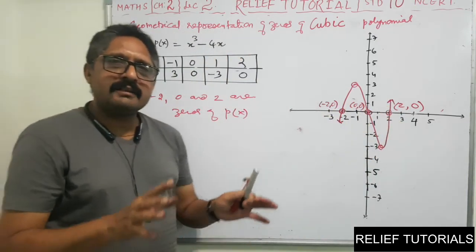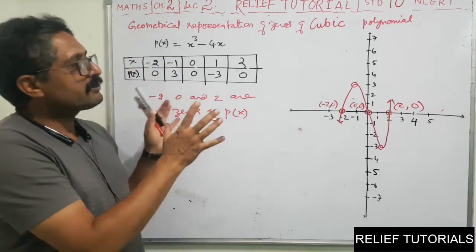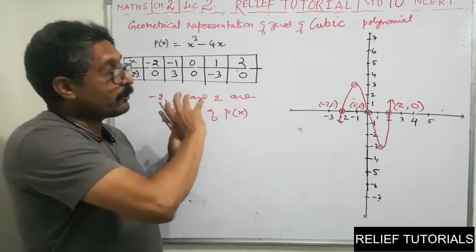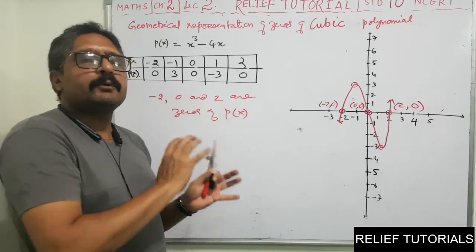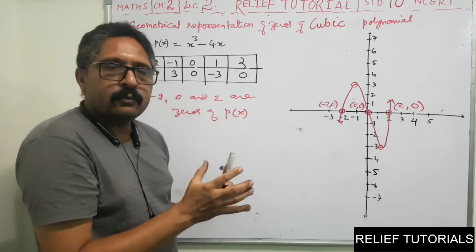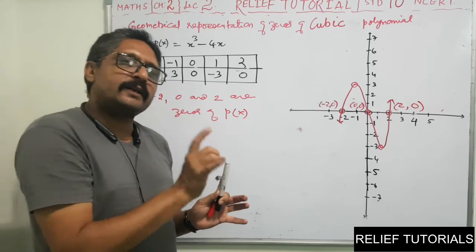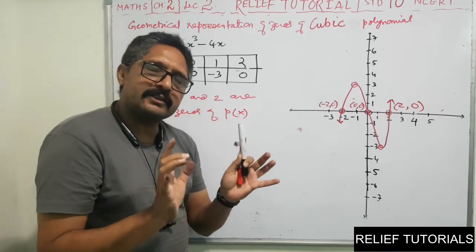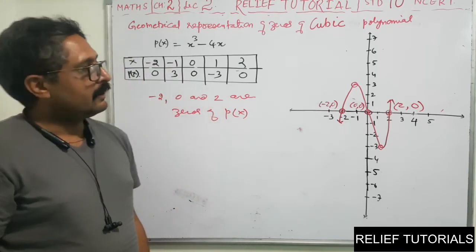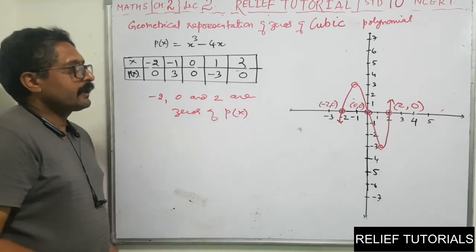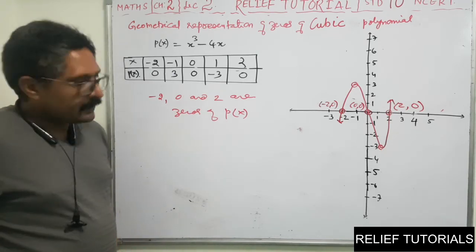In 9th standard we discussed zeros theoretically. Now we understand the geometric meaning: zeros are the X coordinates of the points where the graph intersects the X-axis.